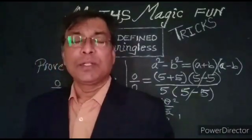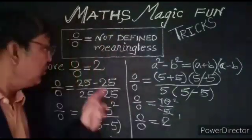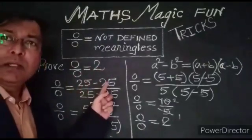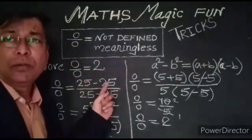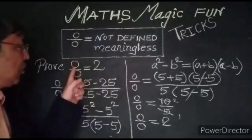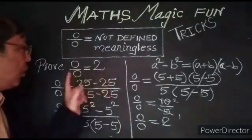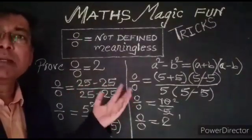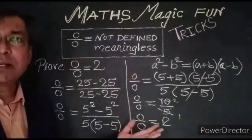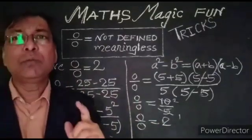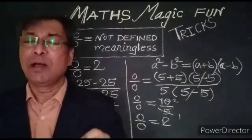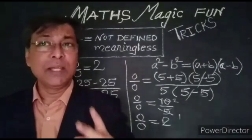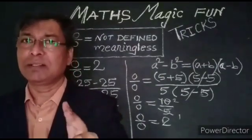You may ask: can we prove 0 upon 0 is equal to 2 by taking any numbers? The answer is no. We can prove 0 upon 0 is equal to 2 only by taking perfect squares like 25, 36, 49, 100, etc. I will show you with one more example how to prove 0 upon 0 is equal to 2.